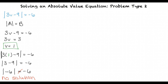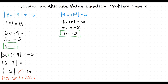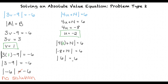Now let's look at the equation: the absolute value of 4u plus 14 is equal to 6. We start by ignoring the absolute value signs and solving for u. After solving, we get u = −2, which when plugged back into the initial equation returns the true statement: |6| = 6.